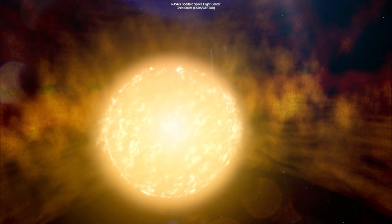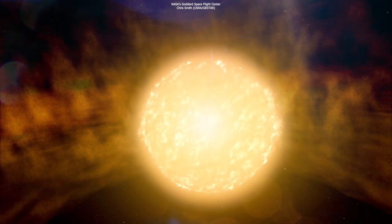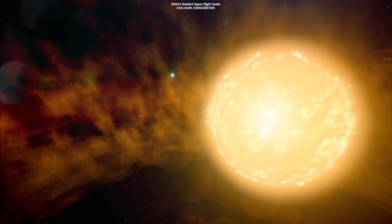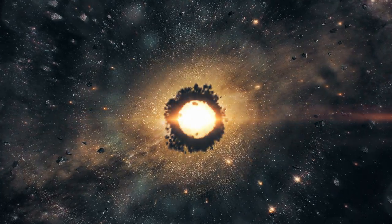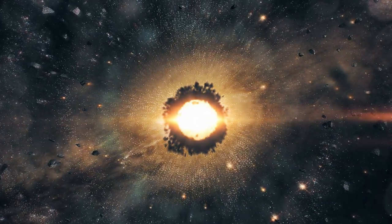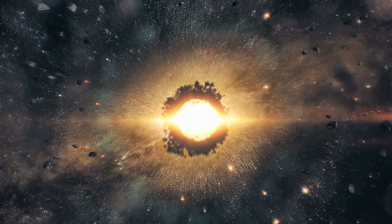If one of the clumps becomes more massive than the other, it can become a star, while the less massive clump becomes a brown dwarf. This happens because the more massive clump is able to reach the temperature and pressure needed for nuclear fusion to occur in its core, while the less massive clump does not.